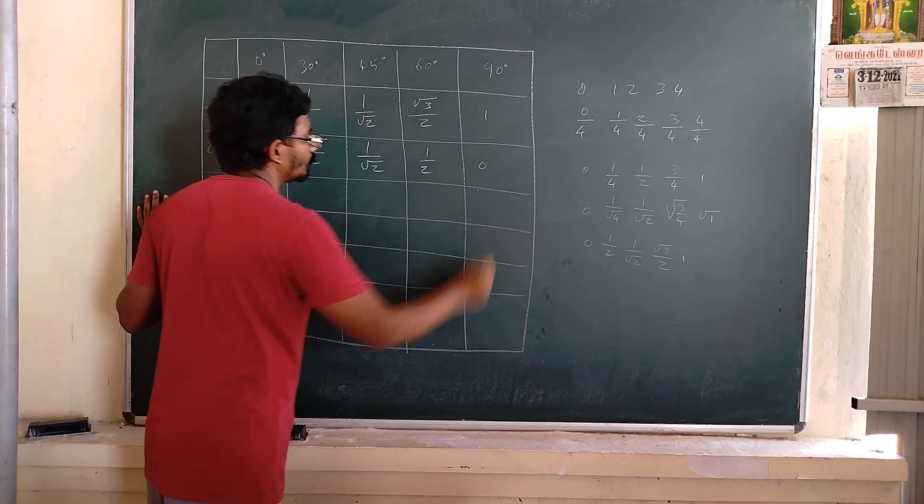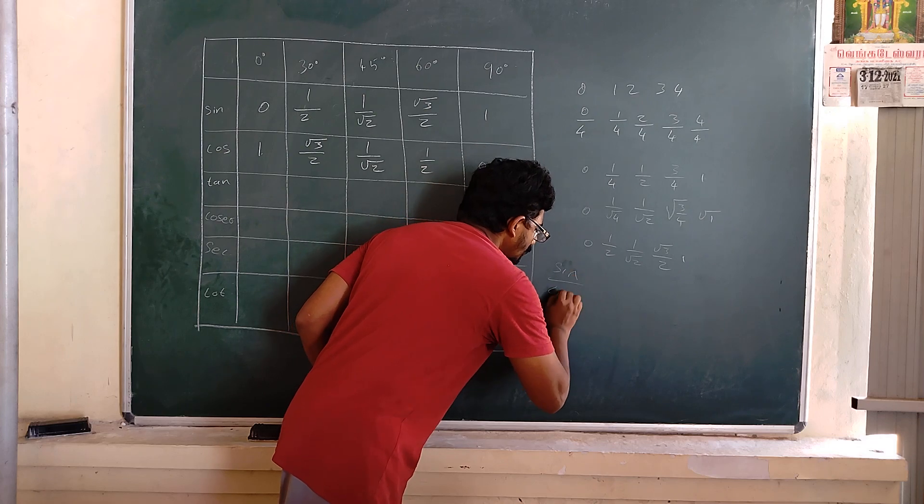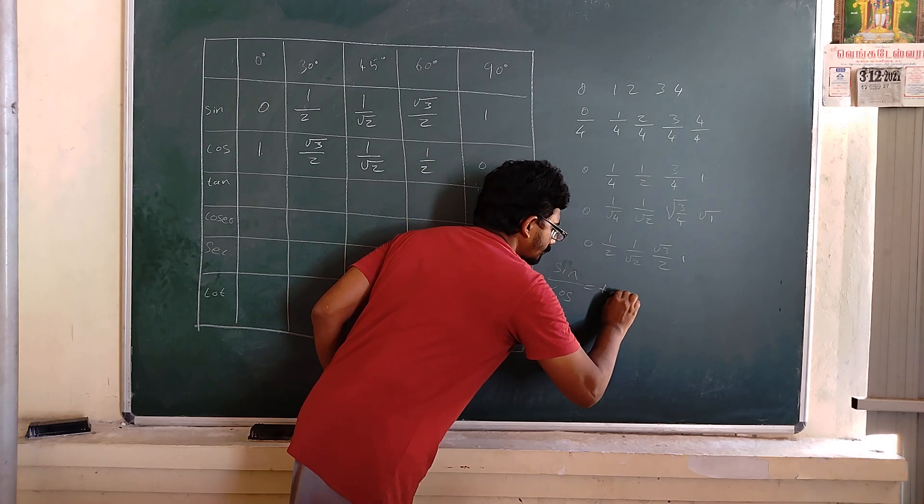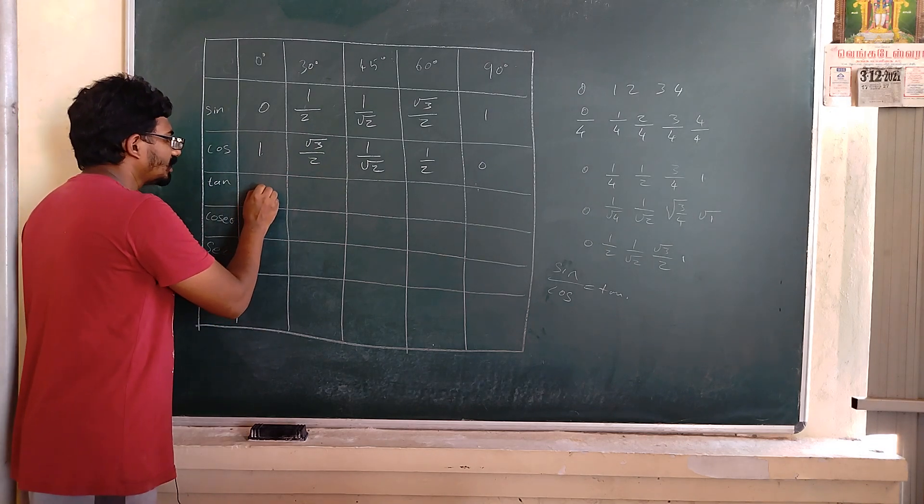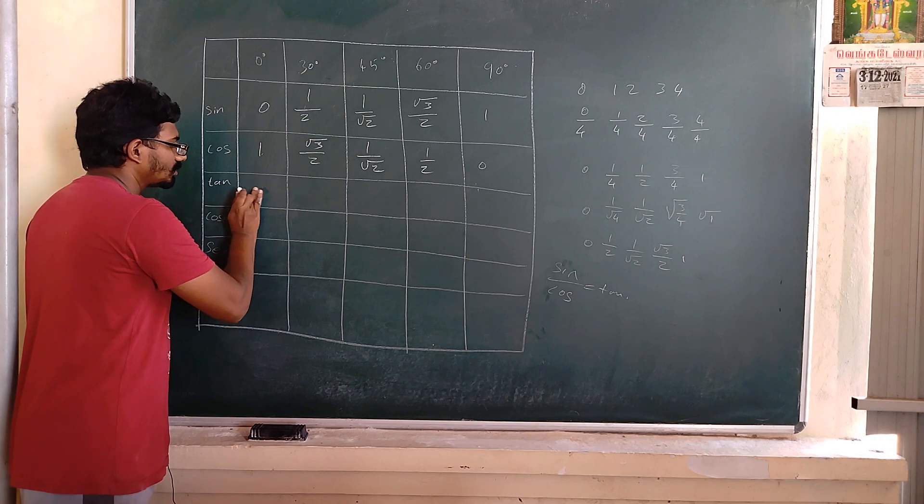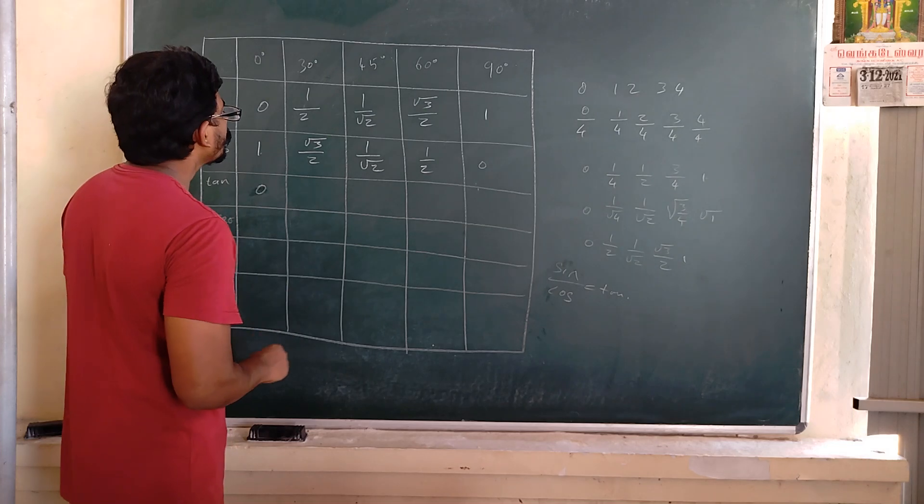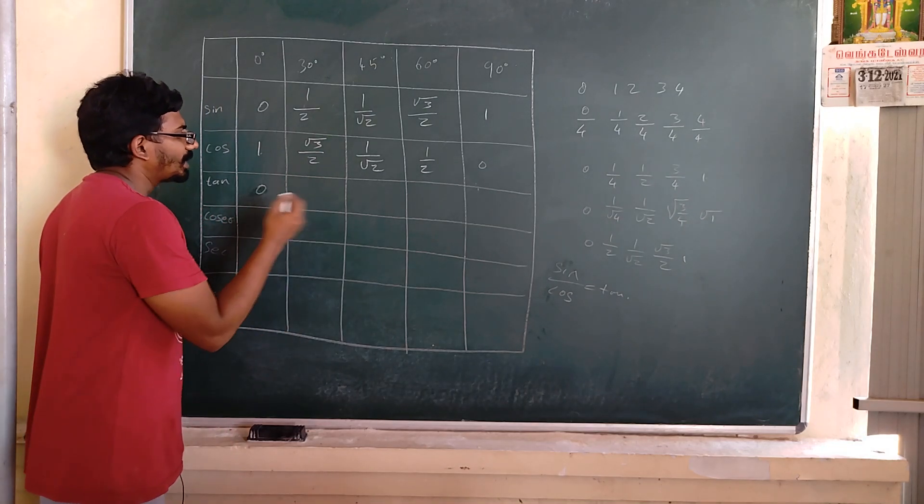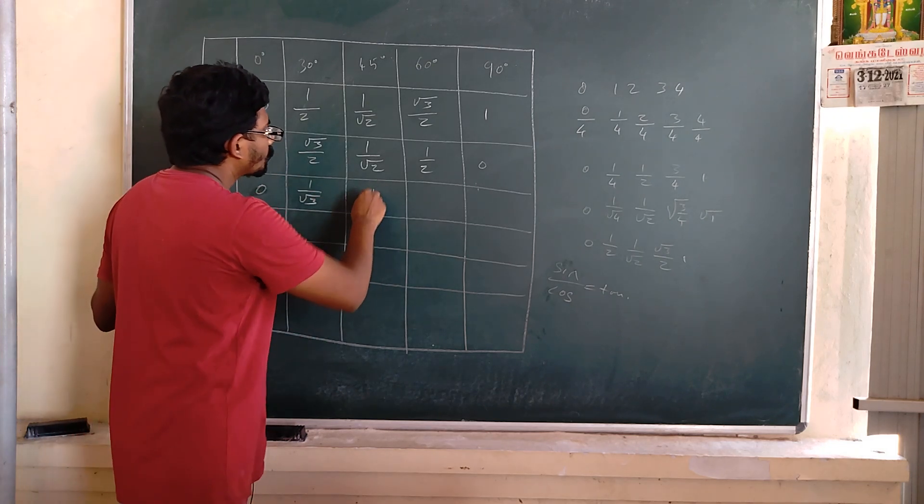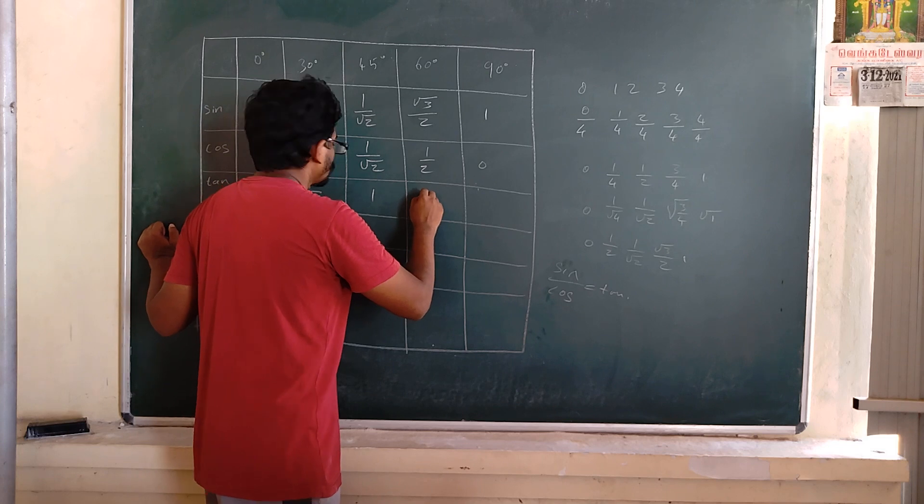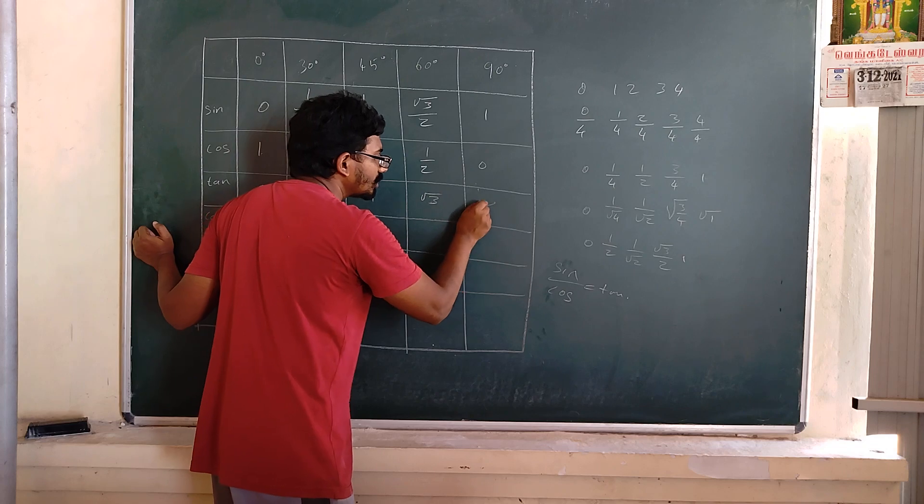What to do for tan? In the table, we very well know that sin by cos is equal to tan. So 0 by 1 is 0. Then 1/2 divided by square root of 3/2, multiplied by 2 by root 3, is 1 divided by square root of 3. Then here it is 1, again it is square root of 3, and 1 over 0 is infinity.